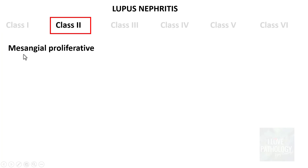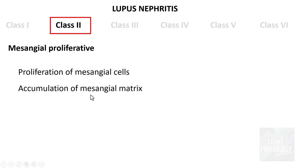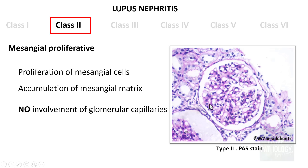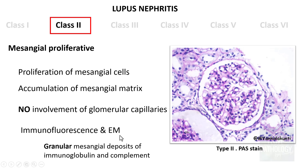Class 2 is referred to as mesangial proliferative lupus nephritis. As the name suggests, there will be proliferation of mesangial cells as well as accumulation of mesangial matrix. PAS staining shows the proliferation of mesangial cells and mesangial matrix accumulation. There is no involvement of the glomerular capillaries — it is purely mesangial. Immunofluorescence and electron microscopy demonstrate granular mesangial deposits of immunoglobulin and complement.